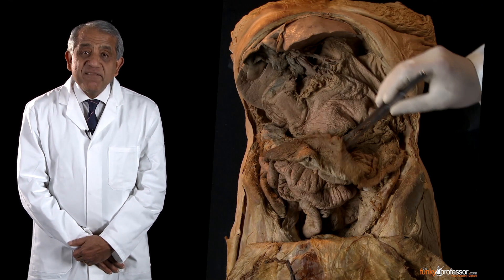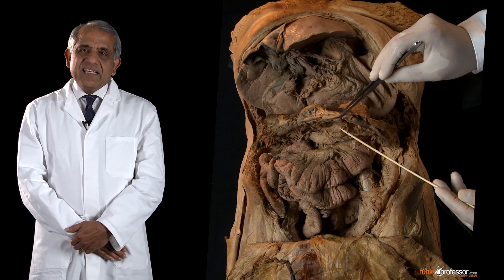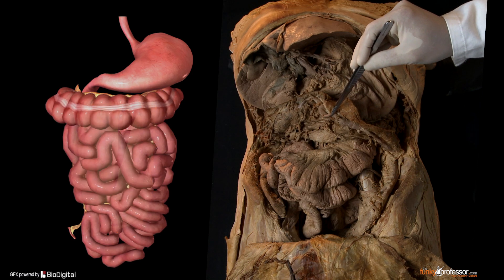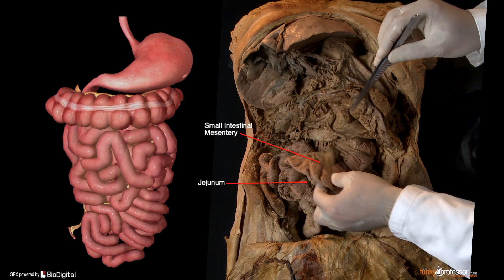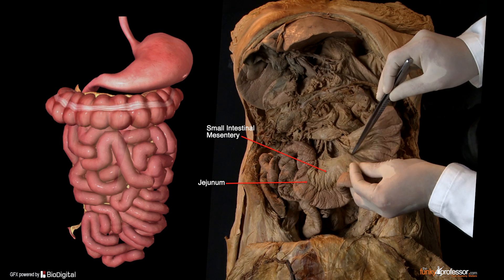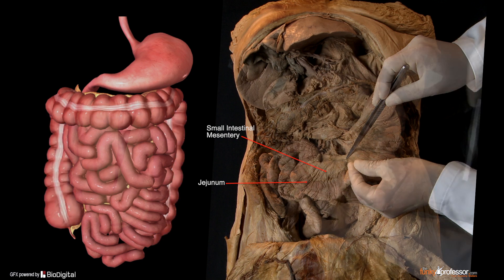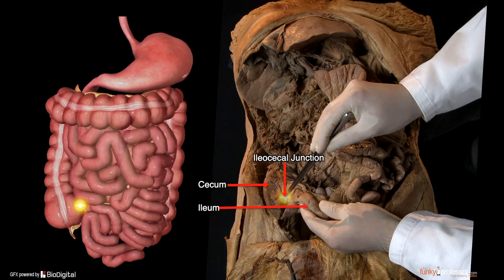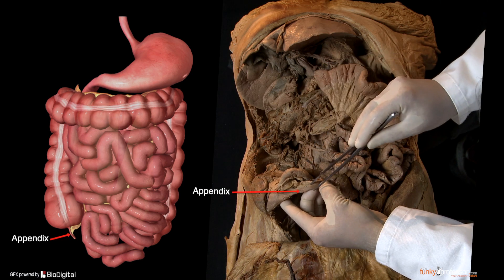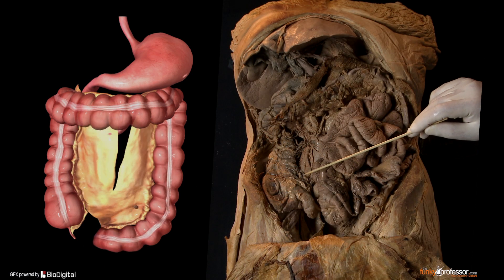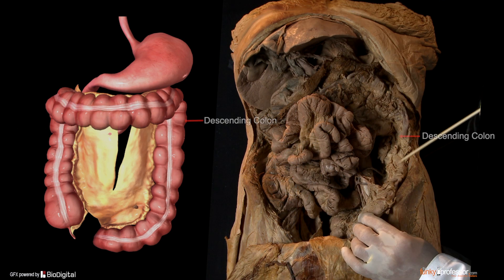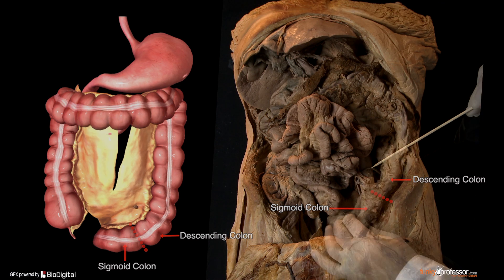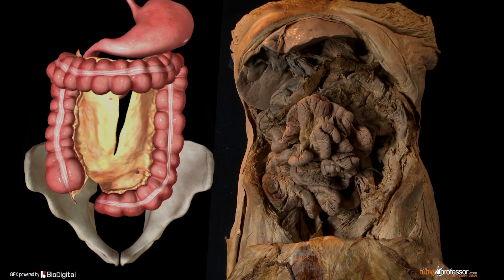Entirely within the infracolic compartment is a double-layered fold of peritoneum that suspends all of the jejunum and all of the ileum — the small intestinal mesentery. The ileum joins the cecum at the ileocecal junction, also in the infracolic compartment. Coming off from the posteromedial aspect of the cecum is the appendix, another content of the infracolic compartment. On either side, the ascending and descending colons are contents of the infracolic compartment. The descending colon is succeeded by the sigmoid colon. The infracolic compartment is also continuous with the pelvic cavity through the pelvic brim.